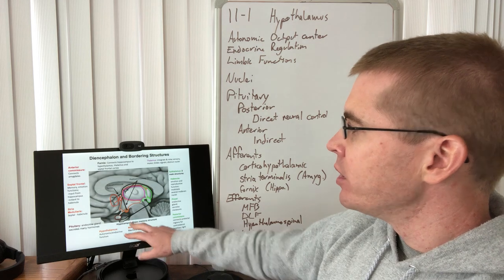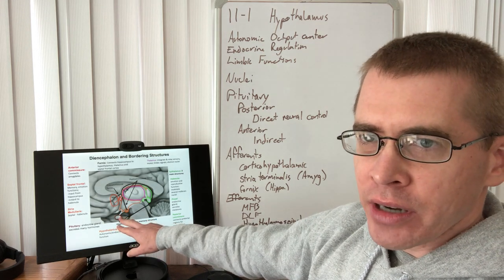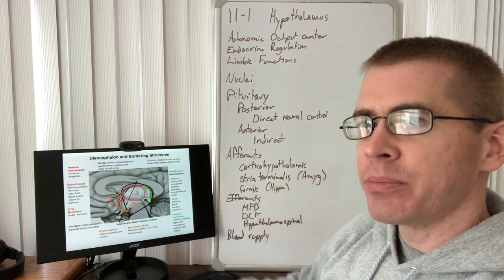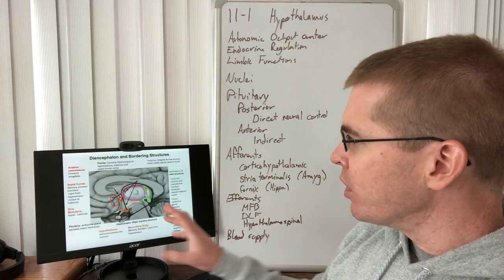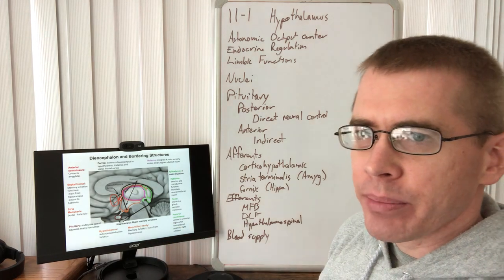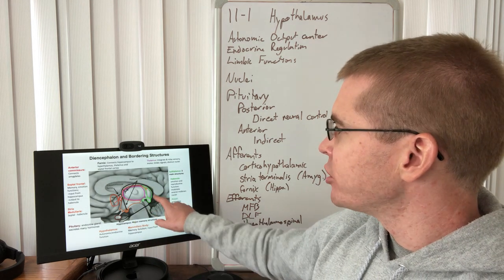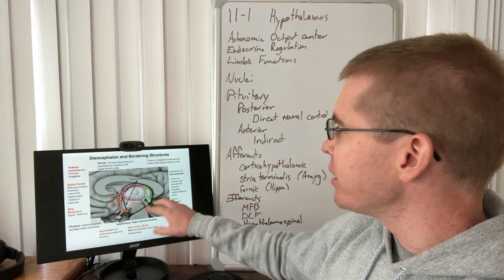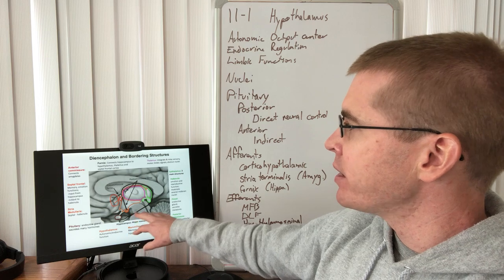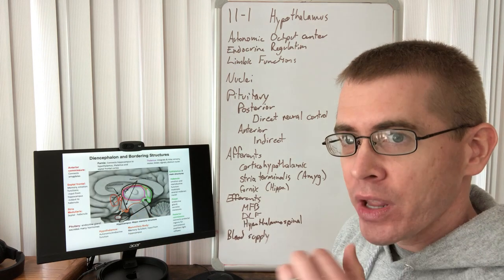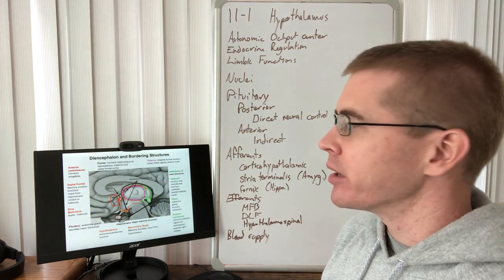We're also going to be talking about the pituitary gland, some of the anatomy and a little bit of the functionality of the pituitary gland, along with the amygdala and the hippocampus, and how both of those input via the stria terminalis and the fornix from respectively the amygdala and the hippocampus.